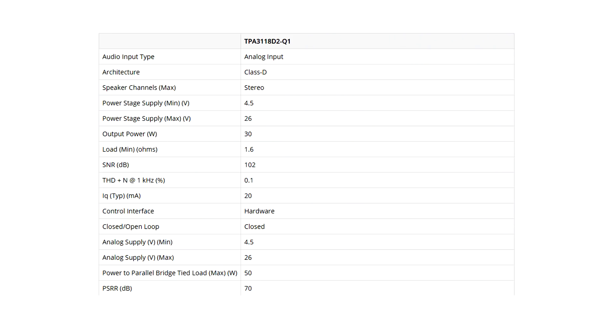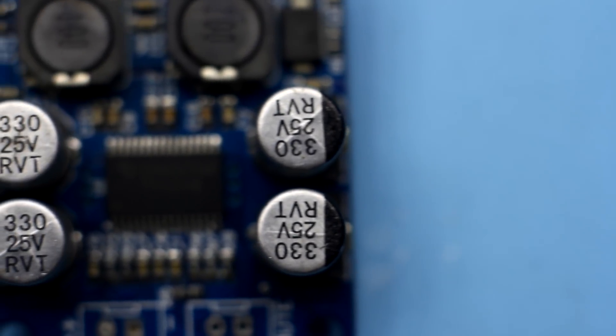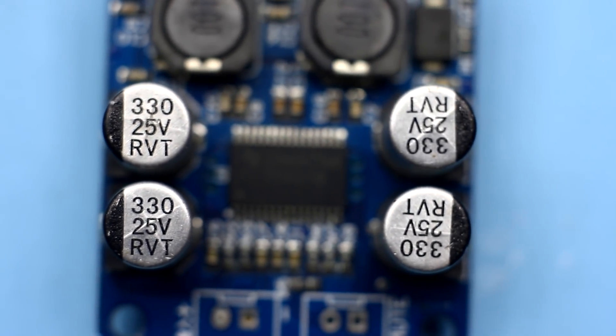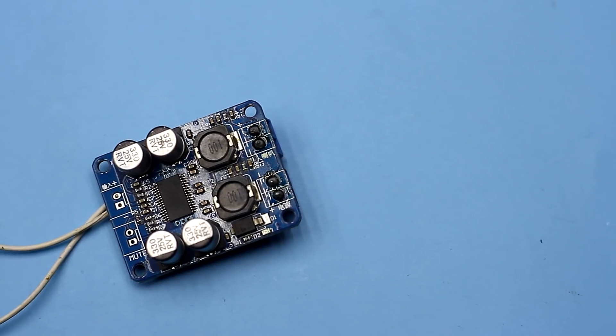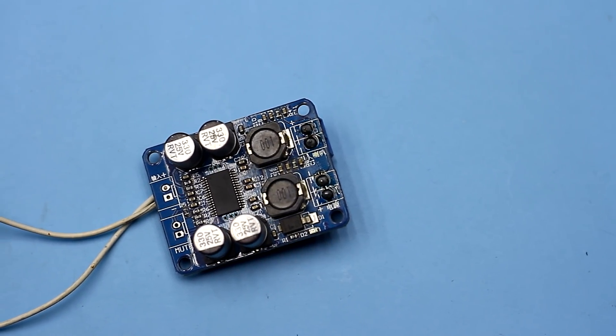I must say that according to the datasheet, the chip can be fed up to 26 volts. It turns out that the manufacturer is greedy and puts the capacitors which will necessarily burst sometime. If there were capacitors for 35 volts, there would not be any questions.